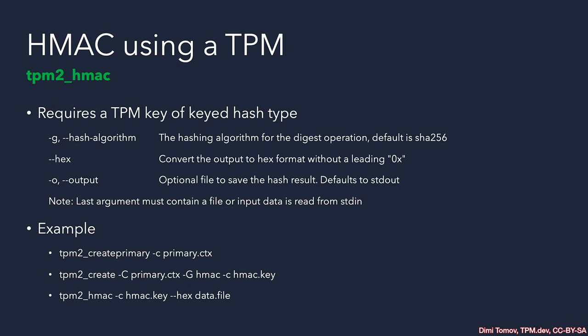To perform HMAC, we need a TPM key of keyed hash type; otherwise, the TPM2_HMAC tool would complain and the HMAC operation would not complete. The only mandatory argument is the actual input data, which can come from a file or standard input. The hashing algorithm defaults to SHA-256, which is good enough, though you can always opt in for a stronger hash algorithm, which would result in a stronger HMAC.